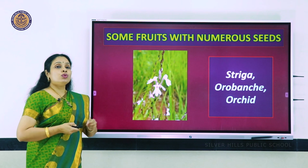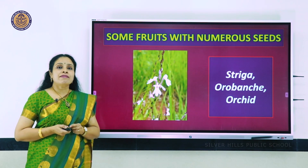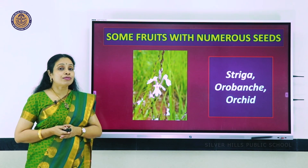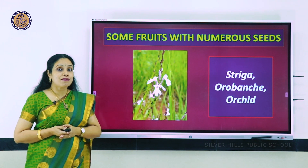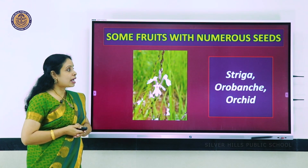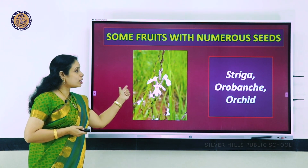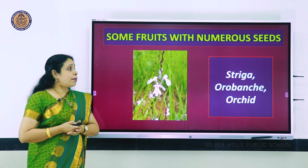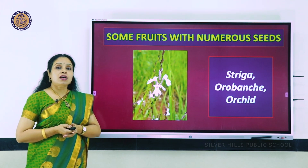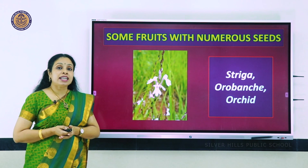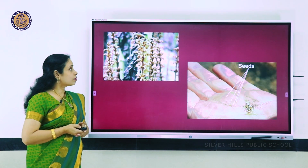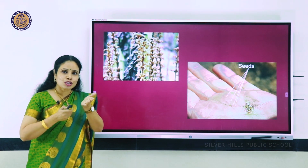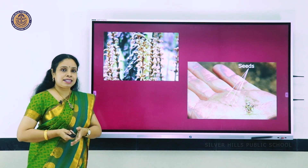There are some fruits with numerous tiny seeds - thousands in one fruit. Examples are Striga, Orobanche, and orchids. You can see that a person's hand holds so many tiny, tiny seeds.